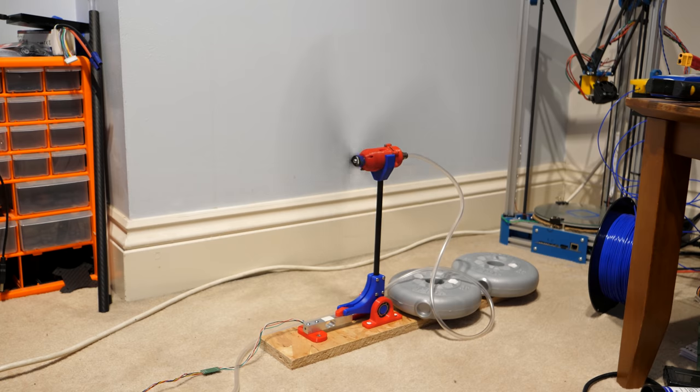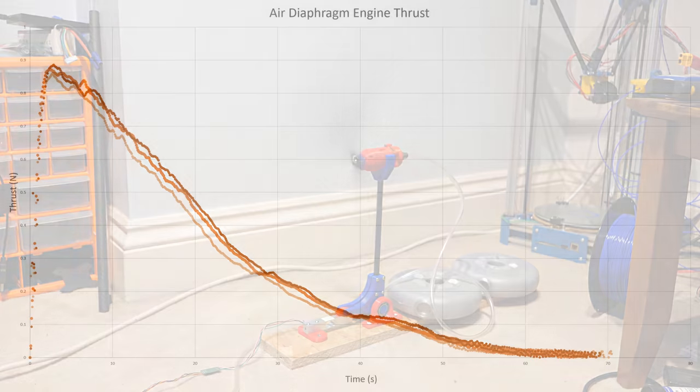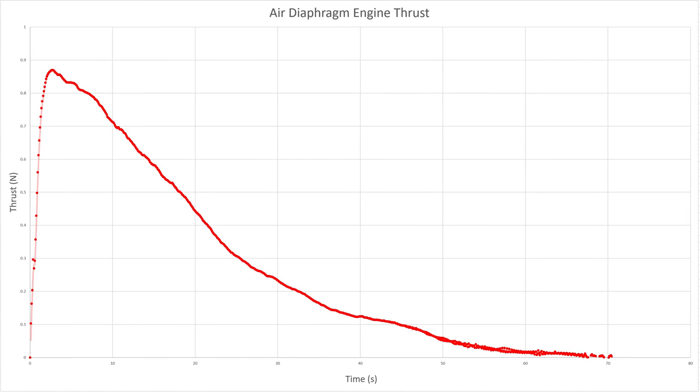After running the test three times, the measurements can be used to plot a thrust versus time graph, which when averaged out, gives us an idea for the engine's max thrust as well as its run time.